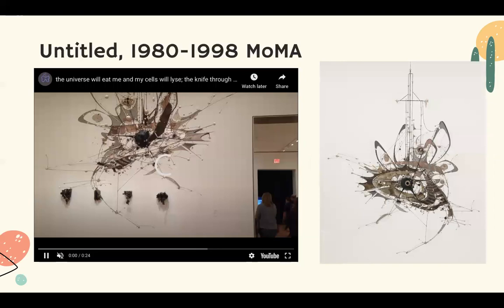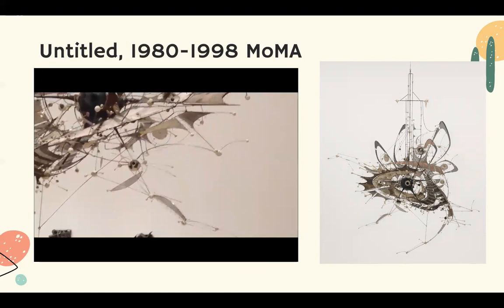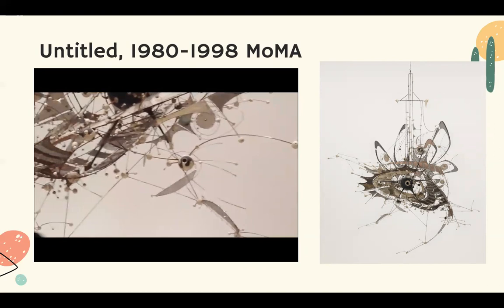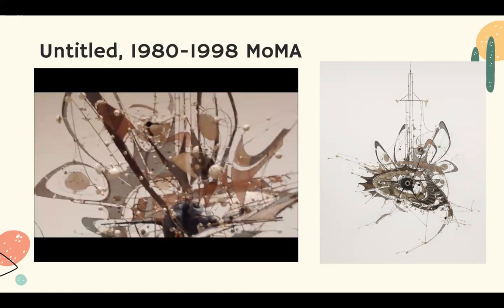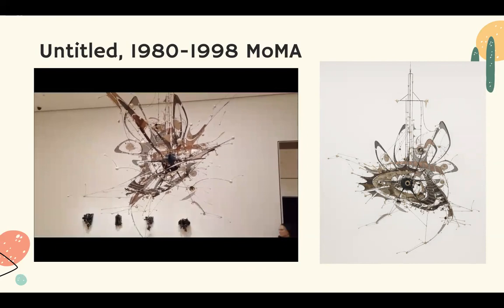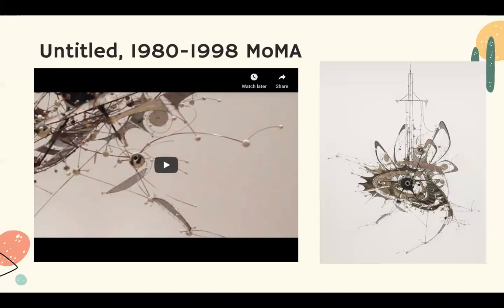One of her most notable works is the Untitled 1980 to 1999, displayed at the Museum of Modern Art. I decided to include a video so you can have more close-up images of this, since this view is really far back so you can see the entire sculpture. Something notable to mention is that all of her works are untitled. I feel that this creates a sense of openness to interpret her works whatever way you want to — none of her works are titled at all.